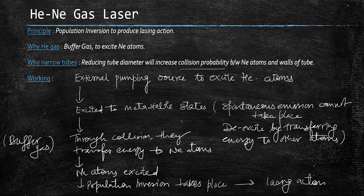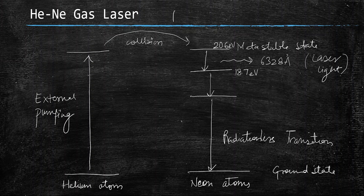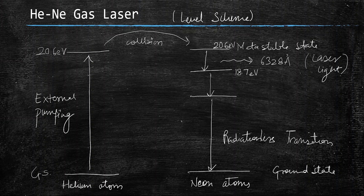Now let's look at the level scheme for the helium-neon laser. Here we have the helium atom energy levels and the neon atom energy levels. Starting from the ground state of helium, external pumping excites it to an energy level of 20.6 electron volts. Through collision, this energy is transferred to the neon atoms.